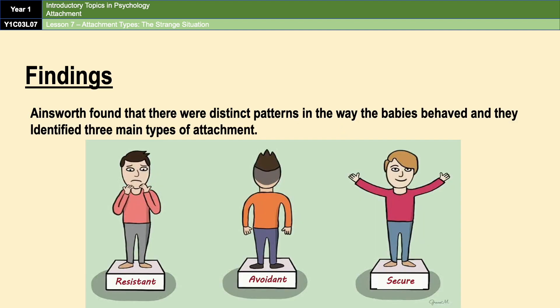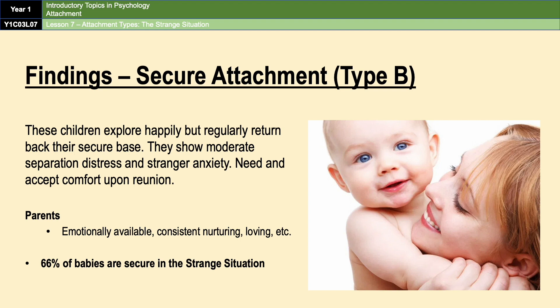After conducting their research, Ainsworth and her colleagues found distinct patterns in the way babies behaved in the strange situation, identifying three main types of attachment: secure, insecure avoidant, and insecure resistant. Secure attachments were the most common, with around 66% of babies classified as secure. These children explore happily but regularly return to their secure base, show moderate separation and stranger anxiety, and need and accept comfort upon reunion — a result of having emotionally available caregivers who provide consistent nurture and care.